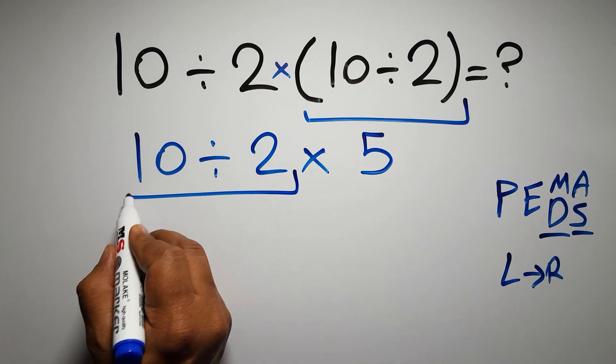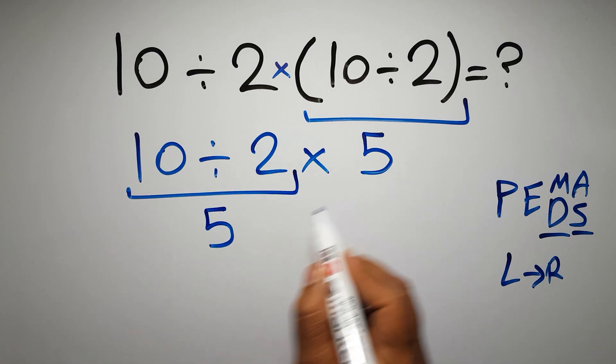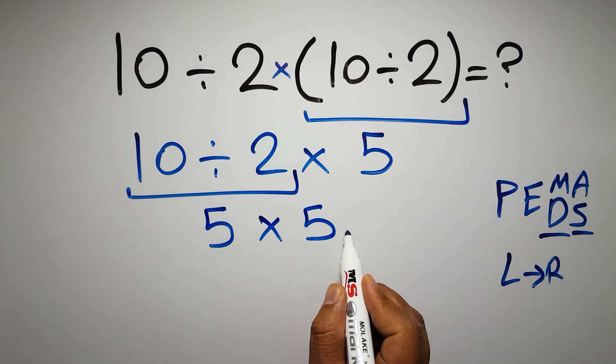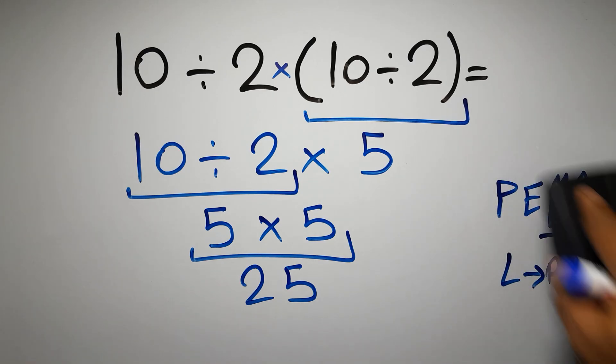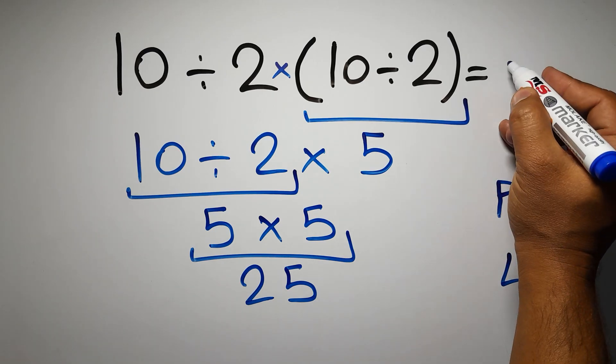10 divided by 2 is just 5, so 5 times 5, which equals 25. And this is our final answer to this problem. The correct answer is 25.